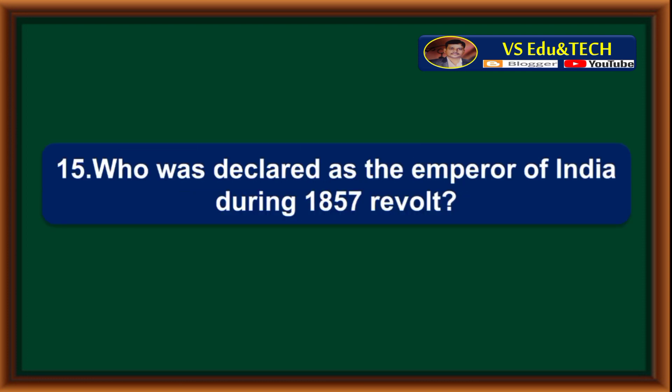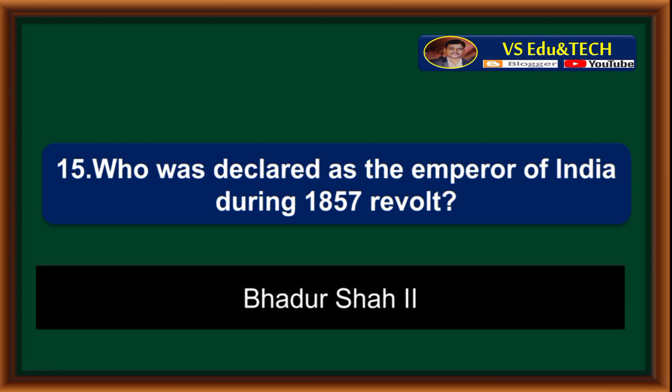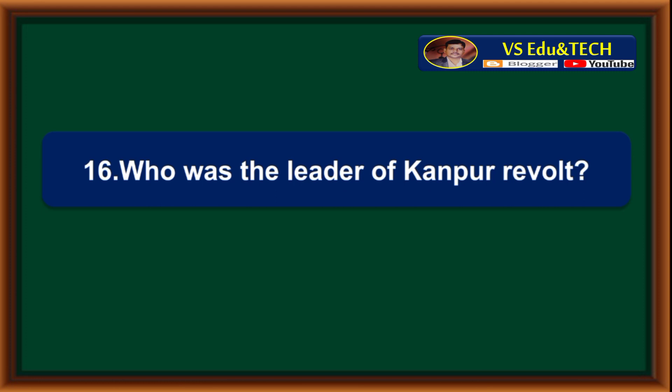Who was declared as the emperor of India during the 1857 revolt? Bahadur Shah II was declared as the emperor of India during the 1857 revolt. Who was the leader of the Kanpur revolt?